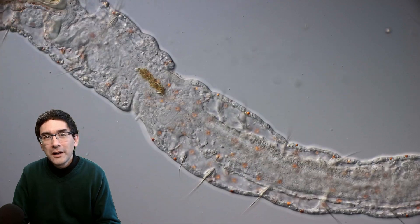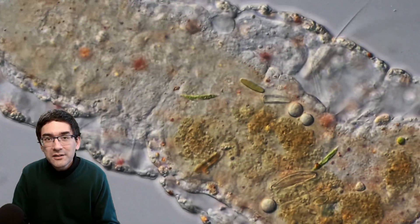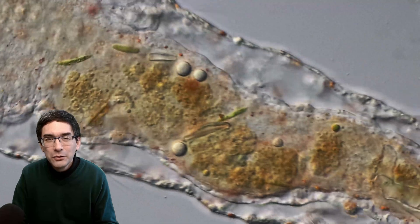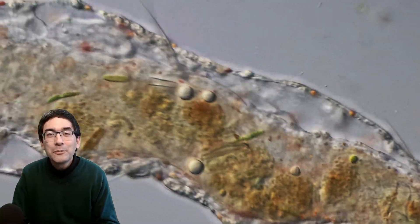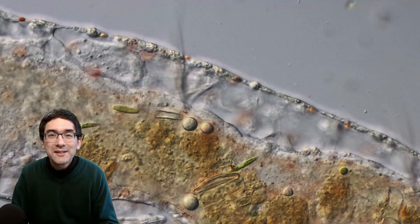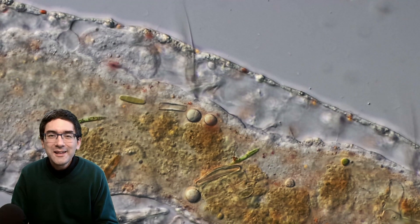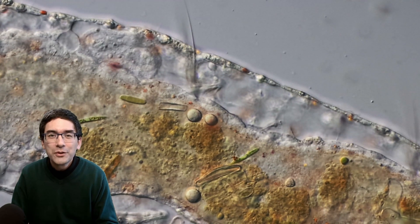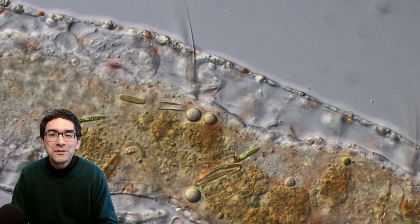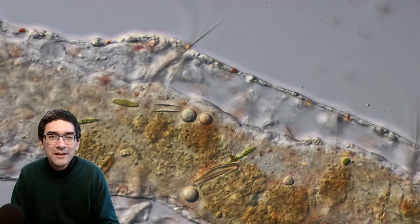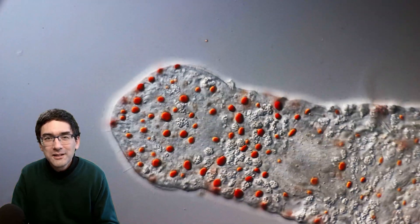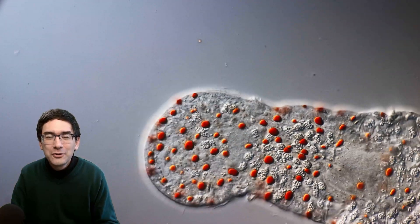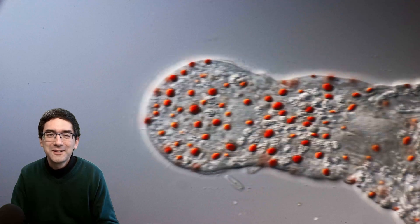You might also be able to find the stomach of this worm, and if you look into the stomach like I've done here, you might be able to see what it has eaten. In this case, this worm has devoured some diatoms—algae that it found in the water. It simply swallowed them up and now they've accumulated and built up inside the stomach.